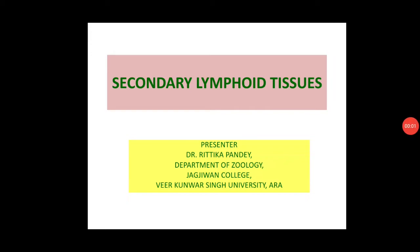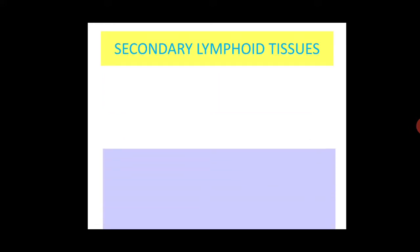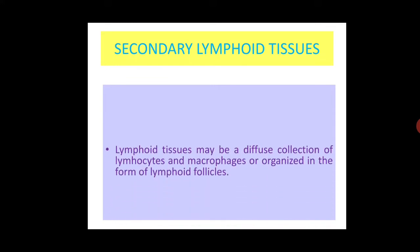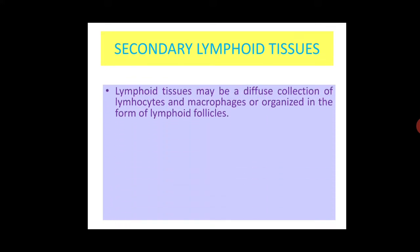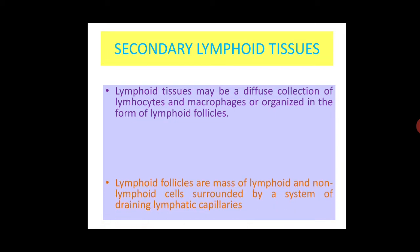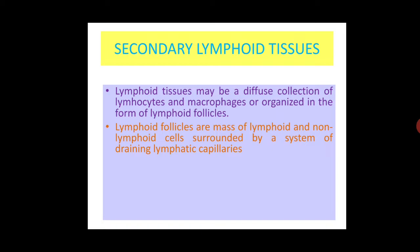Hello everyone, today's topic is secondary lymphoid tissues. Secondary lymphoid tissues may be a diffuse collection of lymphocytes and macrophages, or organized in the form of lymphoid follicles. Lymphoid follicles are masses of lymphoid and non-lymphoid cells surrounded by a system of draining lymphatic capillaries.